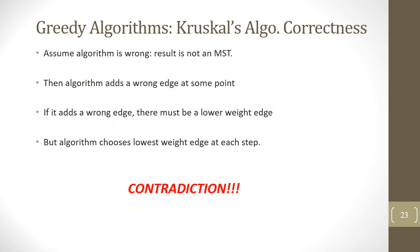Why does Kruskal's algorithm work correctly? Let's assume the algorithm is wrong and the result is not a minimum spanning tree. Then at some stage, the algorithm adds a wrong edge, meaning there must be an edge with lower weight that should have been added. But the algorithm always chooses the lowest weight edge at each step — this is a contradiction. Hence, Kruskal's algorithm results in a minimum spanning tree.